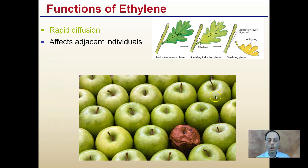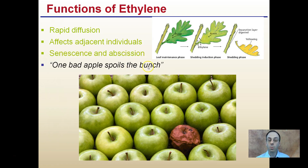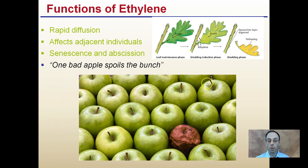This brings up the saying you may have heard: 'one bad apple spoils the bunch.' This is because one bad apple is going to produce high amounts of ethylene. That ethylene affects the adjacent individuals, causing the apples next to it to ripen, which causes those to affect the ones adjacent to them, and it spreads throughout the entire barrel or area.